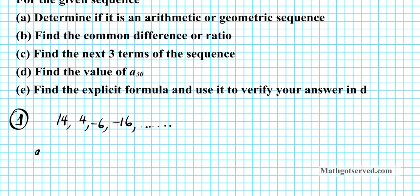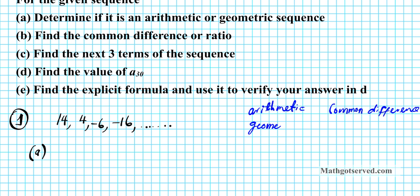On part A we have to determine if it's arithmetic or geometric. For arithmetic, we have a common difference — there's repeated addition or subtraction. That's how subsequent terms of the sequence are generated. For geometric, you have a common ratio — you constantly multiply to generate the next terms of the geometric sequence. Think of arithmetic as add and subtract, and geometric as multiply and divide.